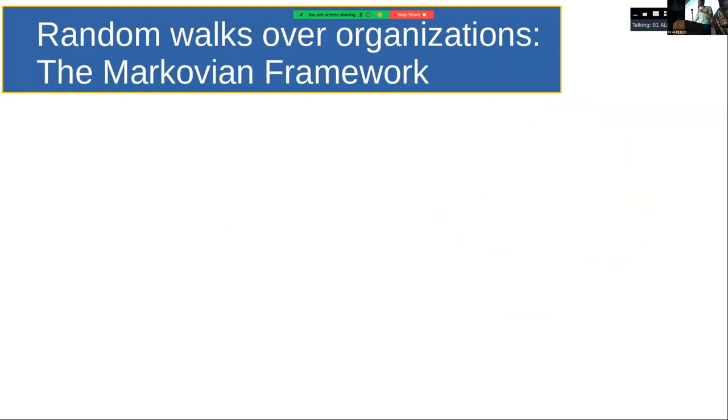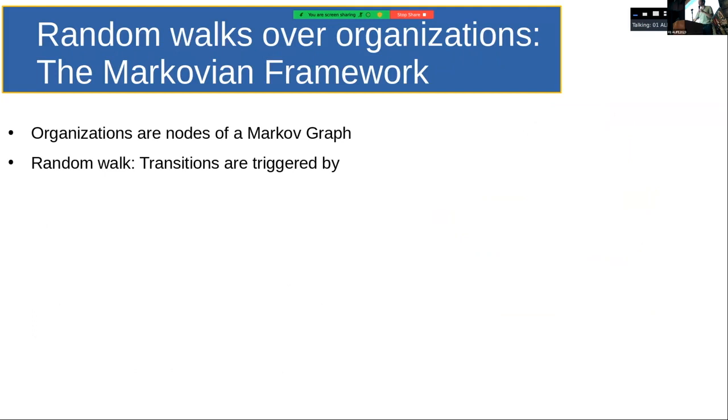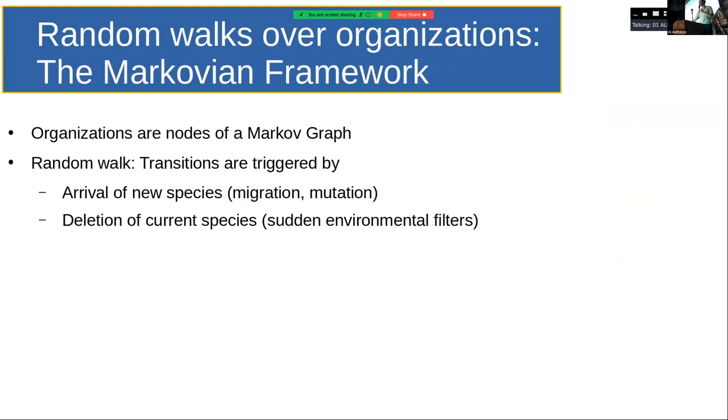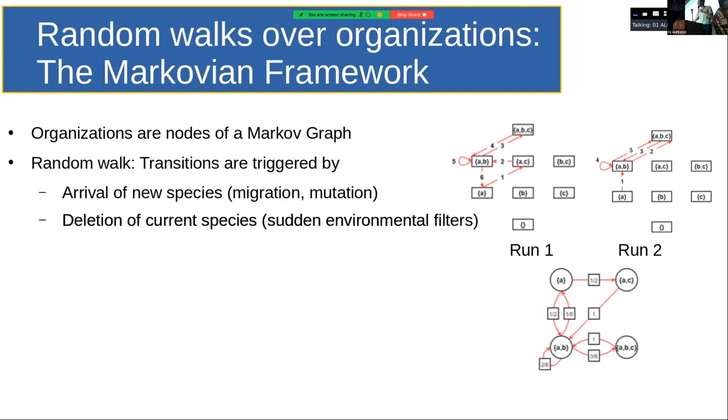And then the Markovian framework is basically a random walk over the organization hierarchy. So organizations will be nodes of this Markov graph, and then the random walk is based on transitions that are triggered by the arrival of new species that, in a chemical or biochemical setting or ecological setting, can be migration, so things come from external, meteors, from whatever, a rocket or something. Or mutations, so new things come out, appear. Or deletion of current species, like sudden changes in temperature or wind that moves some particles that they won't be there anymore. So the environment takes care of deleting things or politics, or the case of Torrent. And so then we run simulations, we run this algorithm a few times, and then we compute the Markov graph with the probabilities that we found according to the frequency in which each transition happens in our algorithm.